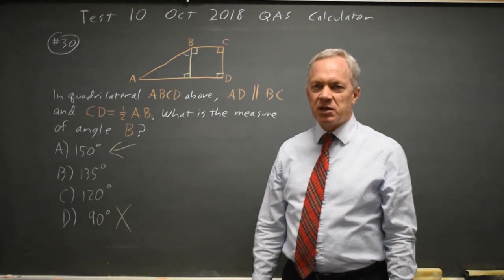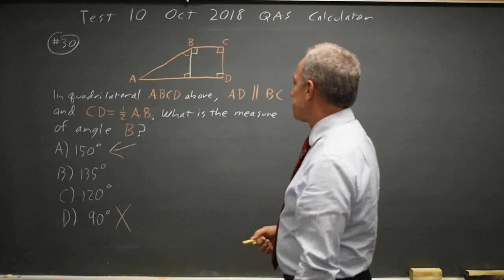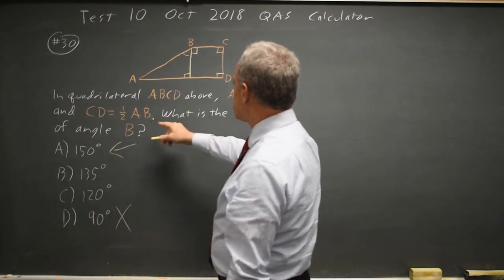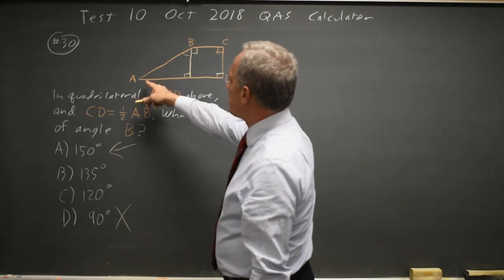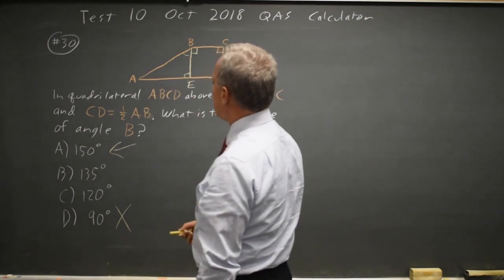But let's do some actual math because computations make us happy. That's why we do math. Since CD, this side, is 1 half AB, then B, let's call it E, is 1 half AB.